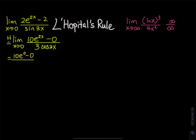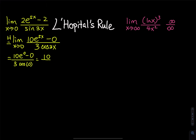When you plug in 0, cosine of 0 equals 1, so we have 3 times cosine of 0. The top is 10 times e to the 0 power minus 0. e to the 0 power is 1, so the top is 10 minus 0, which equals 10. The bottom is 3 times 1, which equals 3. Since we can just plug in 0 to evaluate the function, the final answer is 10 over 3.